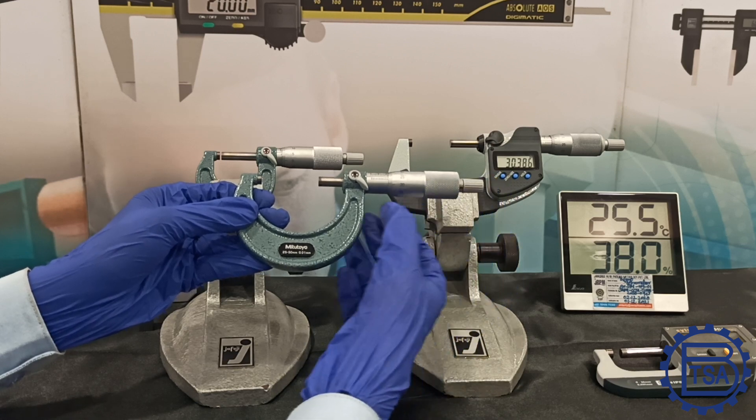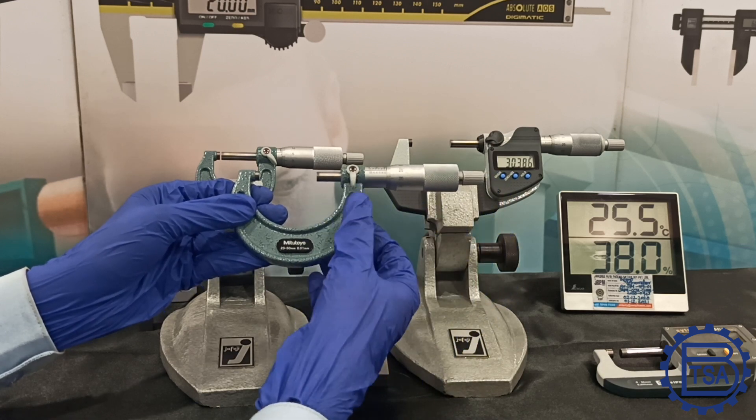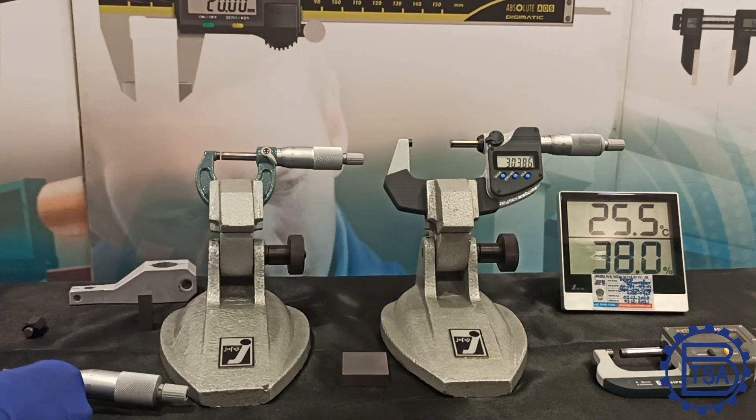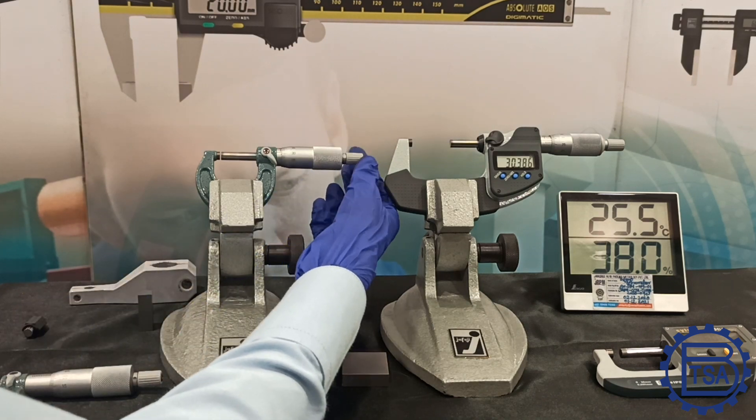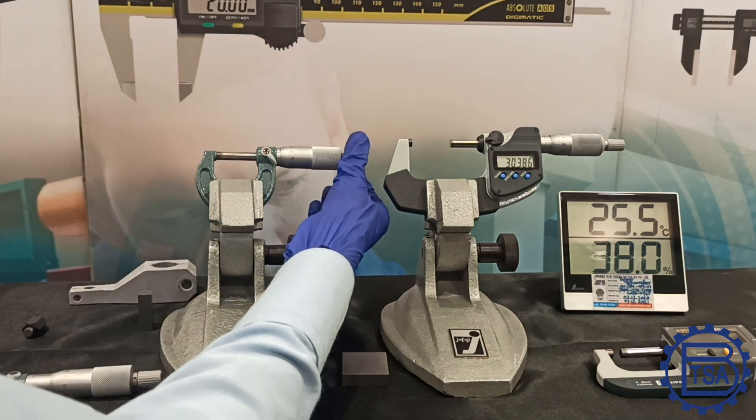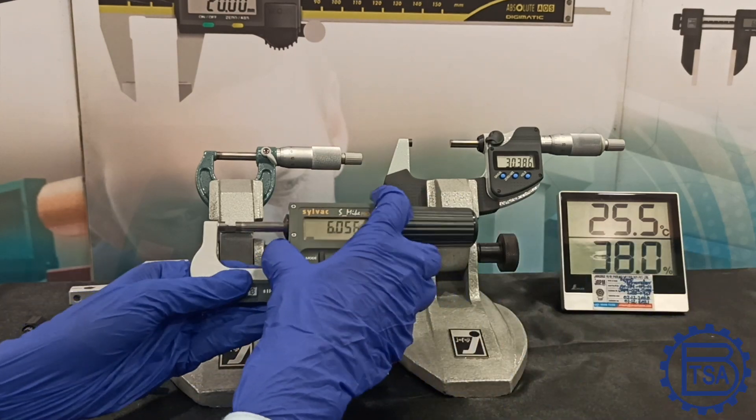Ratchet and spindle clamp or locking knob. There are two types of ratchets available in micrometers: one is the ratchet thimble and the other is the friction thimble.